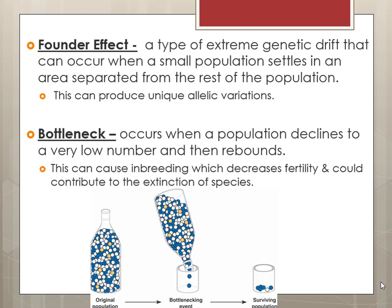Bottlenecking occurs when a population declines very low and then rebounds. This can cause inbreeding, which decreases the fertility rate and could contribute to the extinction of a species. This is something they're dealing with regarding the last surviving cheetahs in the wild — there are so few that inbreeding and the loss of certain traits is a concern. Similarly, the blue macaw was harvested for the pet trade to the point of near extinction, and all the ones rescued are as closely related as identical twins, making finding genetically suitable mates a real problem.